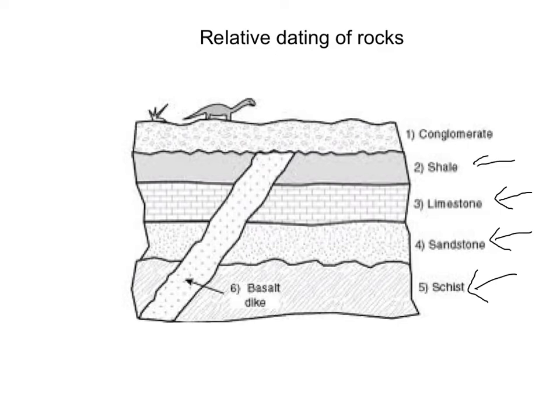Fourth, shale, a sedimentary rock, was laid down. We can see from this basalt dike cutting through all four of these layers — apart from conglomerate — that it must have been the fifth rock laid down. This is an igneous rock that has cut through the four sedimentary rocks that were previously there.